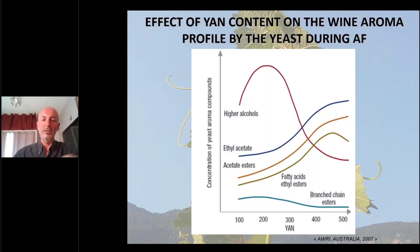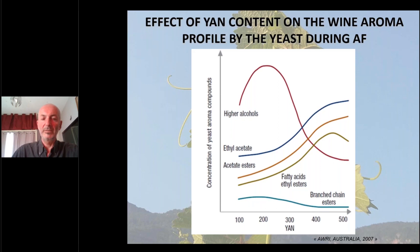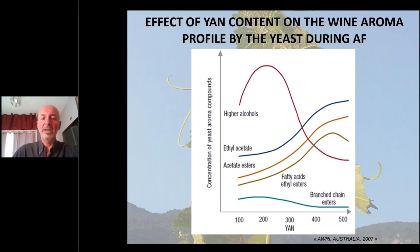This is an interesting slide because it is a synthesis of what I have presented so far. This is a study published by the Australian Wine Research Institute in 2007. On the X axis, you see the EN concentration from 100 to 500, and on the Y axis, the concentration of yeast aroma compounds: higher alcohols, ethyl acetate esters, fatty acids, ethyl esters, and branched chain esters.